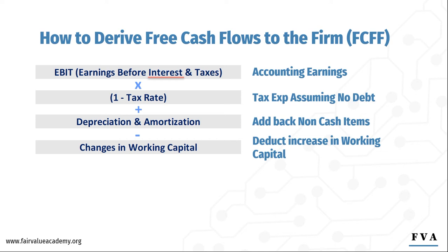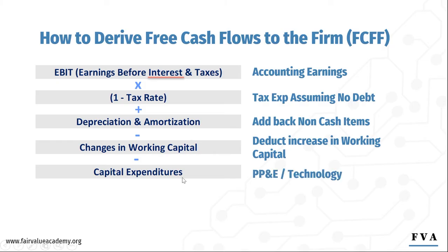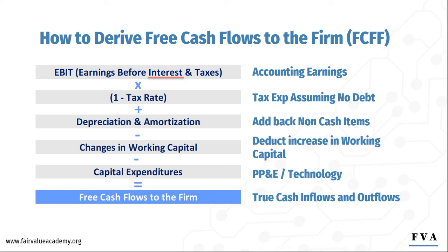Finally, since we have added back the depreciation and amortization, the flip side is that we have to deduct any capital expenditures, short for capex. Capital expenditures is actual cash that you would invest in long-term assets. So if you buy a factory, property, plant and equipment, or some technology, this is capex. Later on, this capex over time is recorded by the accountants as depreciation and amortization. So what we are doing here is undoing all the work the accountants have done, and we are trying to get to the true cash inflows and outflows of a business. This results in free cash flows to the firm, which we will use to forecast and then derive the value of the business.